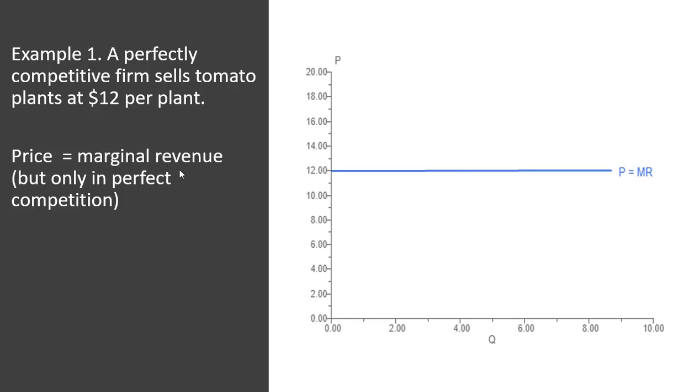Every time a perfectly competitive firm sells one more unit of output, their revenues go up by the price they sold that unit for, $12. A perfectly competitive firm, in other words, doesn't have to cut the price to sell more units. So to graph this, it's just going to be a horizontal line.